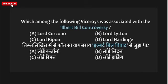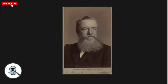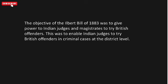Next question: which of the following voices/protests was associated with the Ilbert Bill Controversy? The Ilbert Bill Controversy happened during the time of Lord Rippon, so option C is your right answer. Here you can see the image of Lord Rippon. The Ilbert Bill was introduced in 1883 — this date may also be asked. The basic concept was that Indian Judges and Magistrates would be given the power to try British offenders — both criminal and civil — in court.